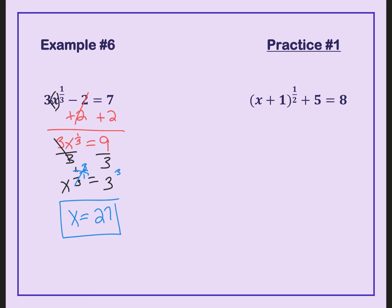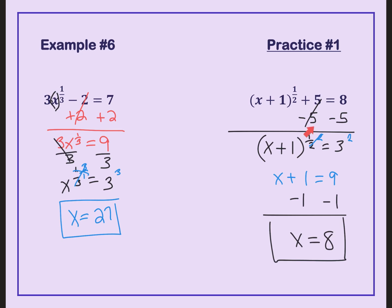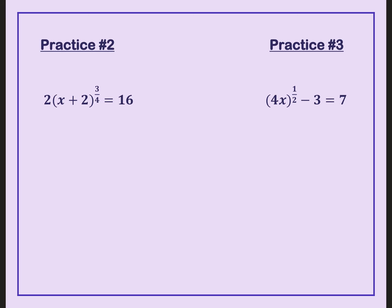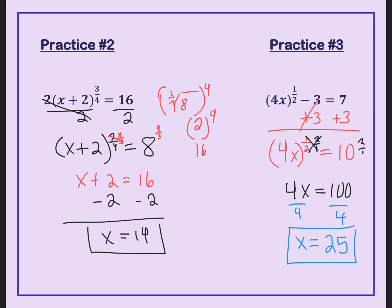Now pause this video and try practice question number 1 on your own. To check: first, subtract 5 from both sides, then to get rid of the rational exponent, square it — multiply by 2 over 1. You get x plus 1 equals 9, subtract 1 from both sides. For practice 2, we had done this earlier — x equals 14. For practice number 3, add 3 to both sides to isolate the parentheses, then square both sides to get 4x equals 100. Divide by 4 and you get x equals 25.